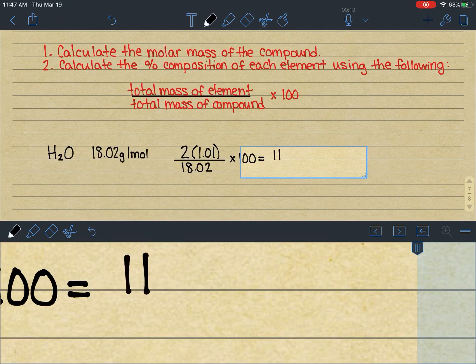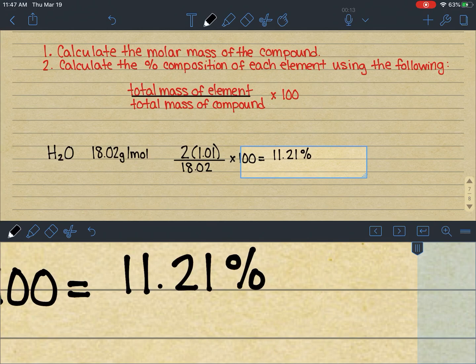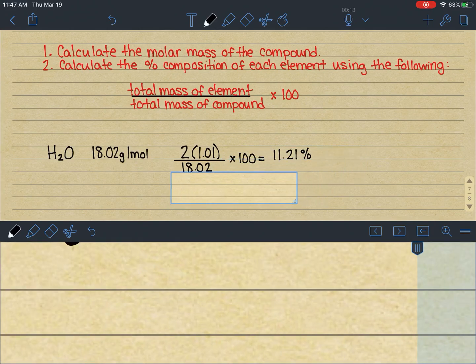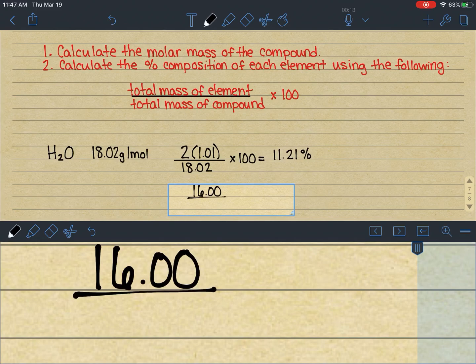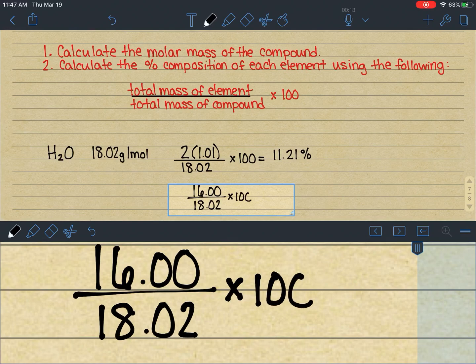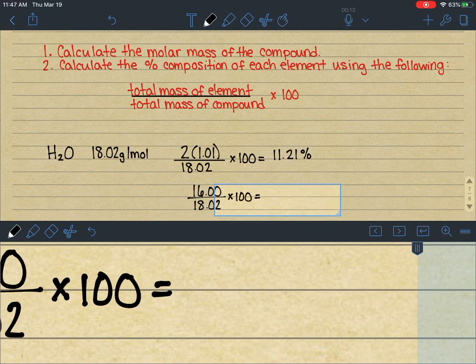Now, if I want to know what the percent of oxygen is, I can do the exact same thing. So I could do, we have one oxygen divided by the molar mass of water, 18.02 times 100, and get my answer that way. So 88.79%.